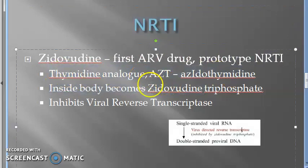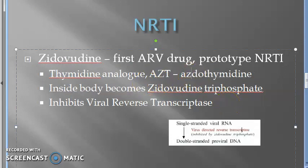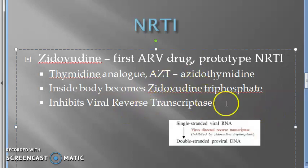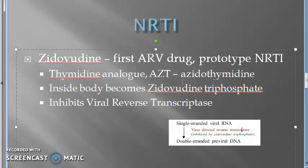Zidovudine is represented as AZT — azidothymidine. Inside the body, it gets converted to zidovudine triphosphate through phosphorylation, and it then inhibits the viral reverse transcriptase.